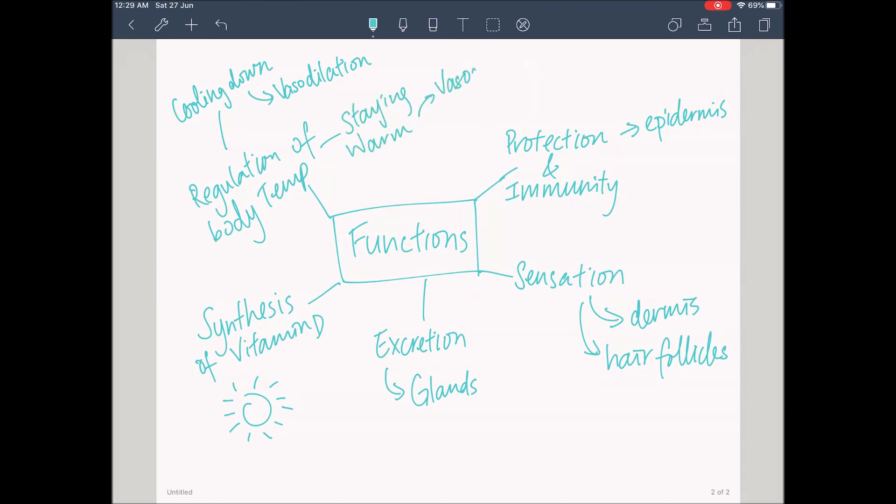The hair also lies flat to prevent heat from being trapped. To stay warm, something called vasoconstriction happens. The blood vessel constricts so less blood can flow to the surface of the skin, so less heat is lost through thermal radiation. The hair also stands upright to trap air.